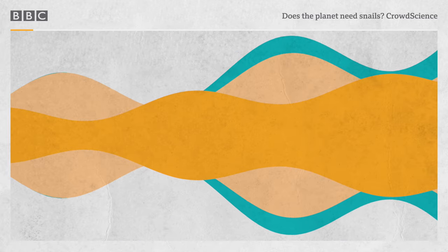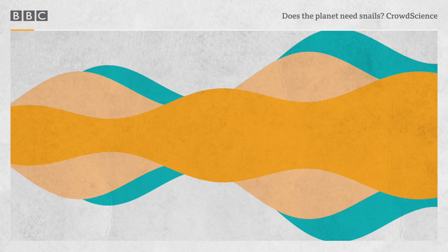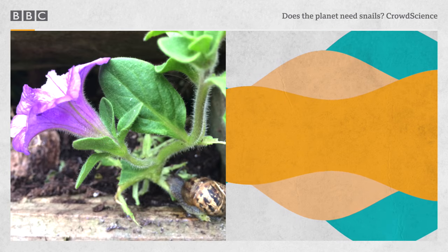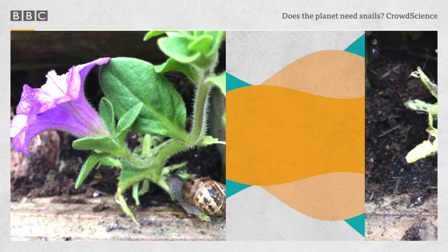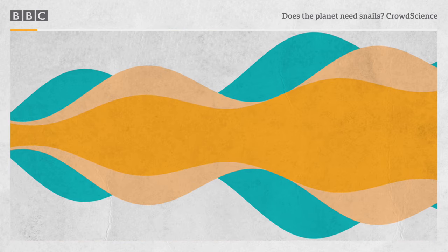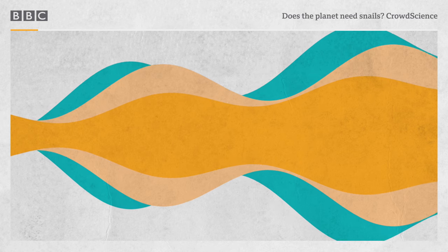I'm Marnie Chesterton, and my tiny meter of garden also has a snail problem. It feels good to commiserate with a fellow sufferer. On top of the rocks, it was completely covered with flowers. In a week, everything disappeared. They ate all the flowers, all the leaves, and all the stalks. Presumably you didn't just get in touch to compare notes on snail damage. What's your question for CrowdScience?